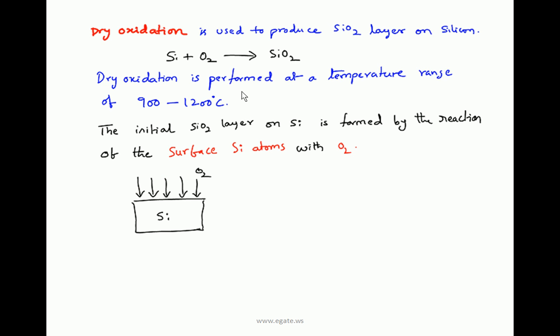Dry oxidation is used to produce a silicon dioxide layer on silicon. The process is: Si + O₂ → SiO₂. Dry oxidation is performed at a temperature range of 900 to 1200 degree centigrade. Initially, the silicon dioxide layer on silicon is formed by the reaction of surface silicon atoms with oxygen — oxygen atoms diffuse toward and react with silicon near the surface.